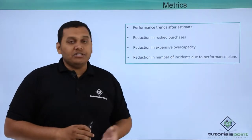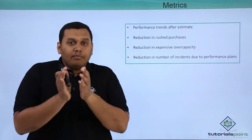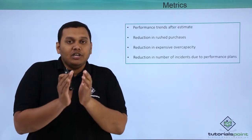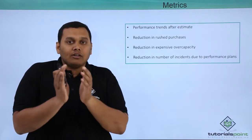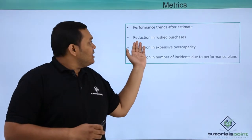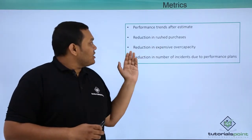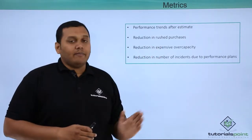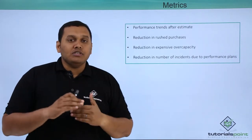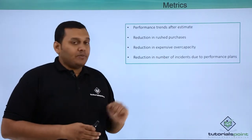The next metric is reduction in rush purchases. Based on capacity management, we reduce all the unwanted purchases. Additionally, there is reduction in expensive over-capacity, meaning capacity management also reduces over-capacity expenses.